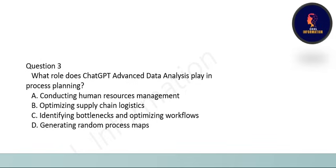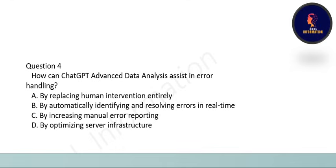Next question: what role does ChatGPT Advanced Data Analysis play in process planning? The options include conducting human resource management, optimizing supply chain logistics, identifying bottlenecks and optimizing workflow, or generating random process maps. The correct option is C: identifying bottlenecks and optimizing workflow.